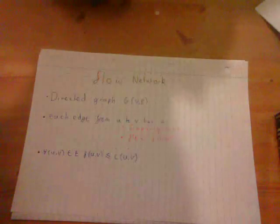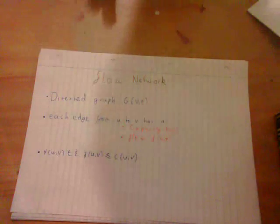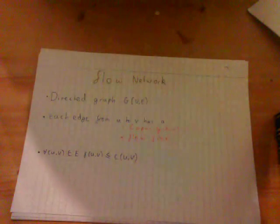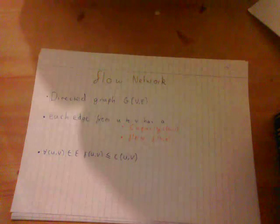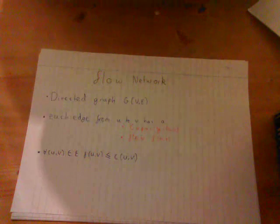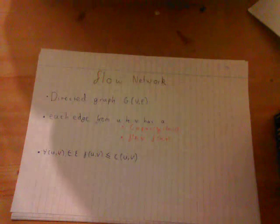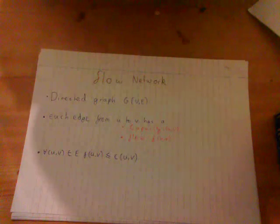A flow network is a directed graph G, where each edge from U to V has a capacity value C and a flow F, where the flow must always be less than or equal to the capacity of the edge.